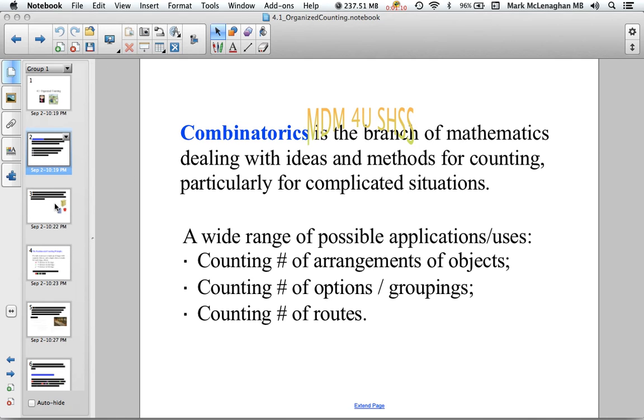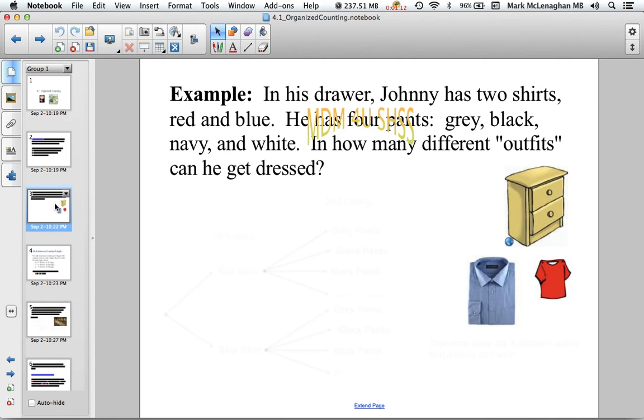Let's look at some examples. In this drawer Johnny has two shirts, a red shirt and a blue shirt, and four pairs of pants: grey, black, navy, and white. He wants to figure out how many different outfits he has so he can get dressed for school.